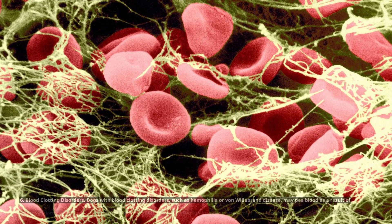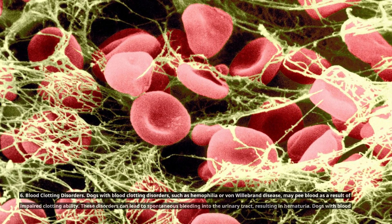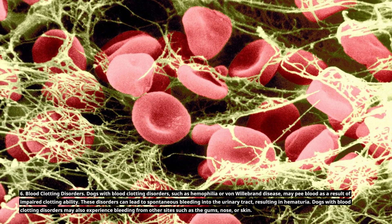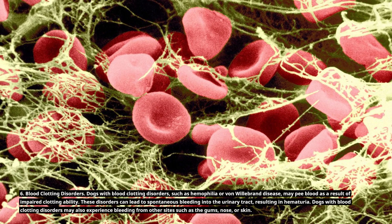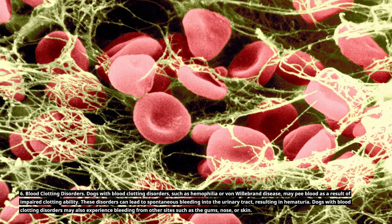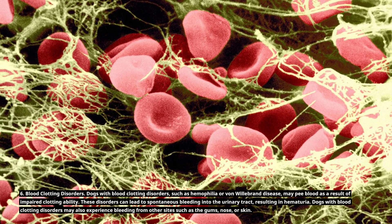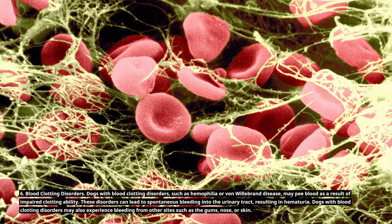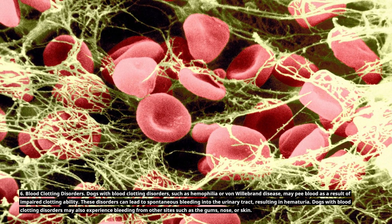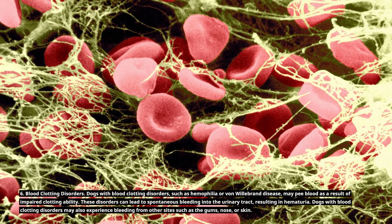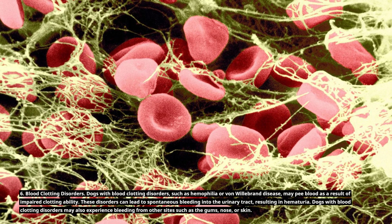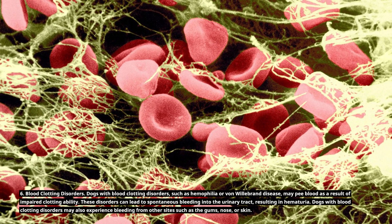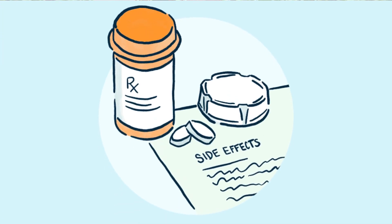6. Blood clotting disorders. Dogs with blood clotting disorders, such as hemophilia or von Willebrand disease, may pee blood as a result of impaired clotting ability. These disorders can lead to spontaneous bleeding into the urinary tract, resulting in hematuria. Dogs with blood clotting disorders may also experience bleeding from other sites such as the gums, nose, or skin.